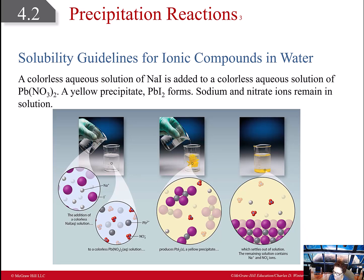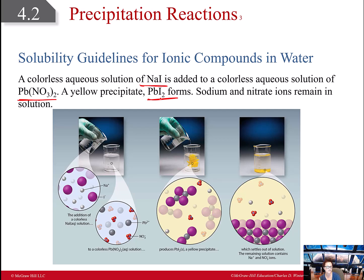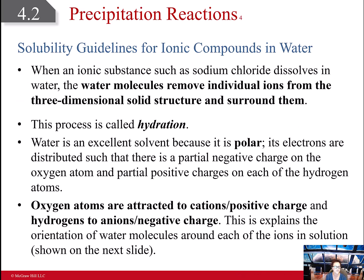An example: a colorless aqueous solution of sodium iodide is added to a colorless aqueous solution of lead nitrate. Those are both soluble because they're aqueous solutions. A yellow precipitate forms in the form of lead iodide. Sodium and nitrate ions remain in solution.